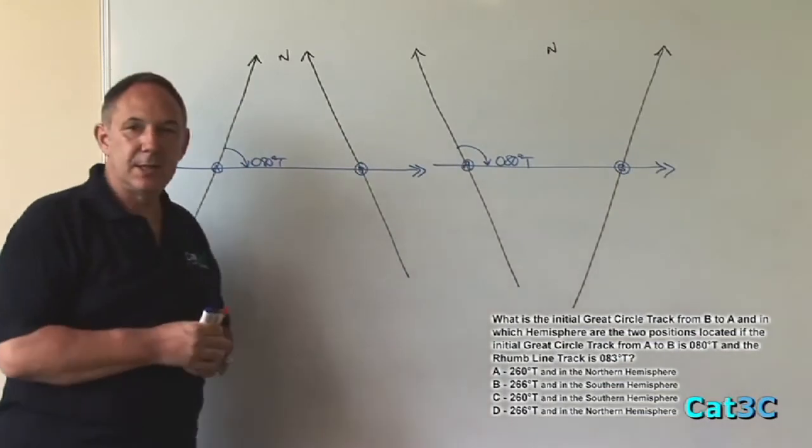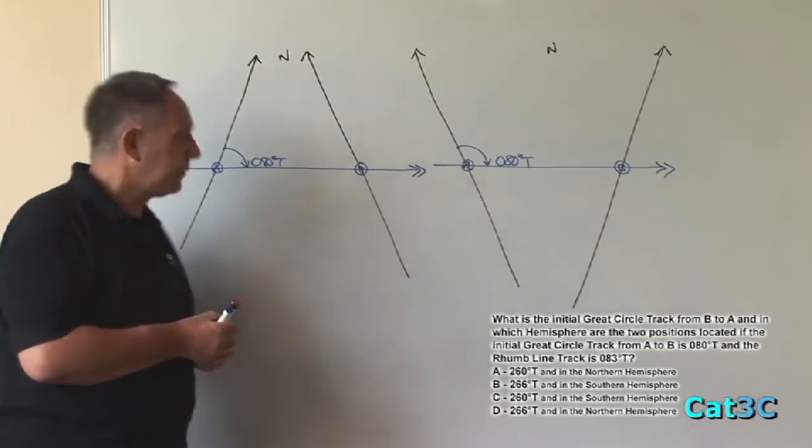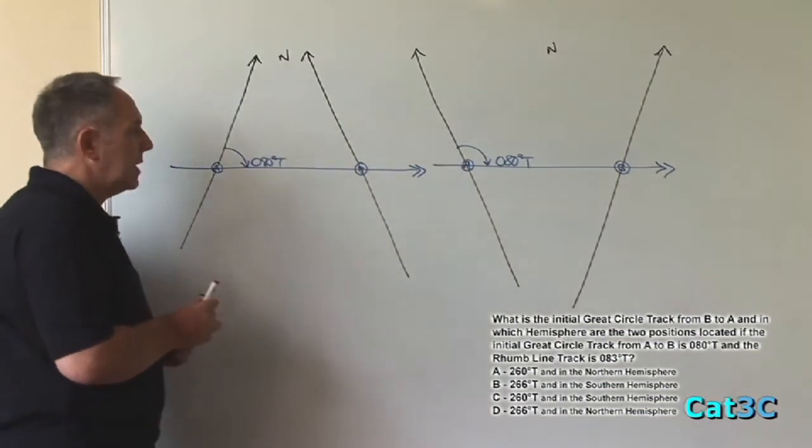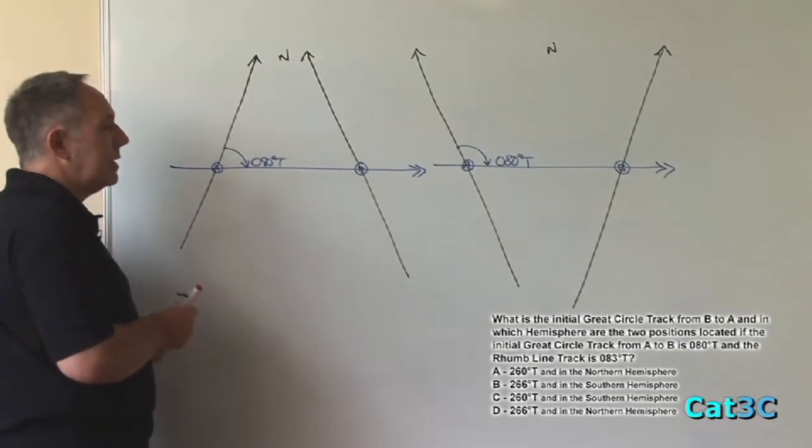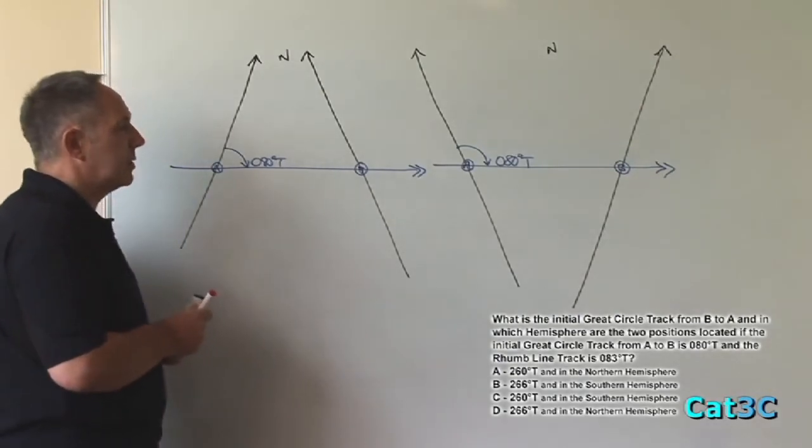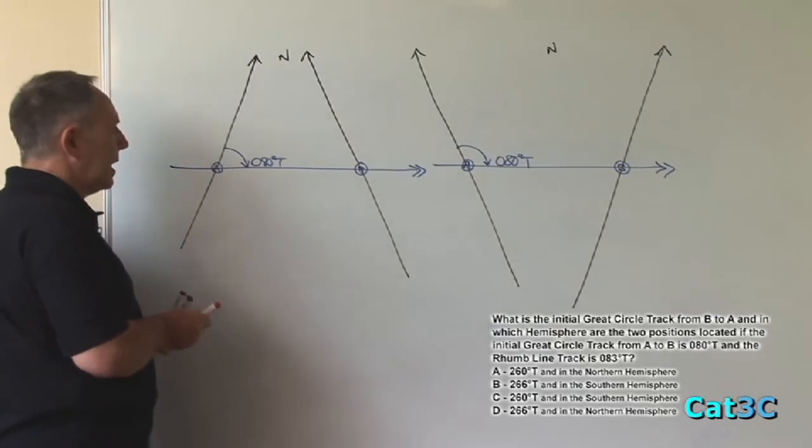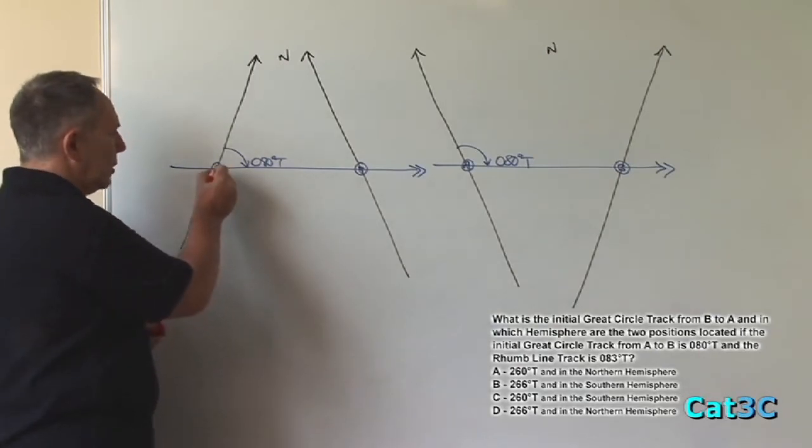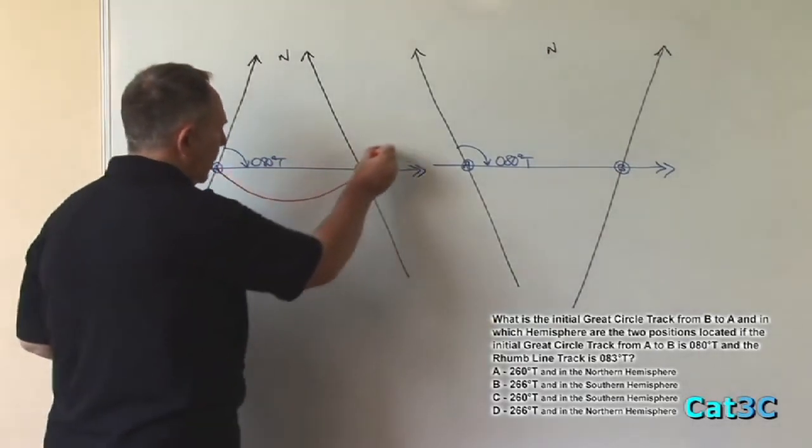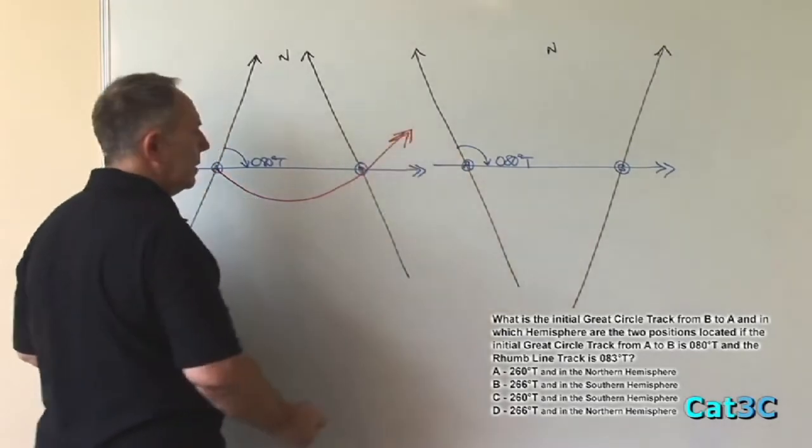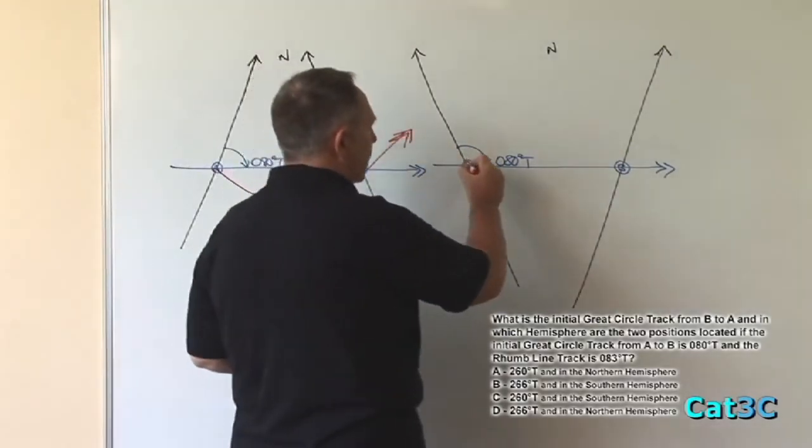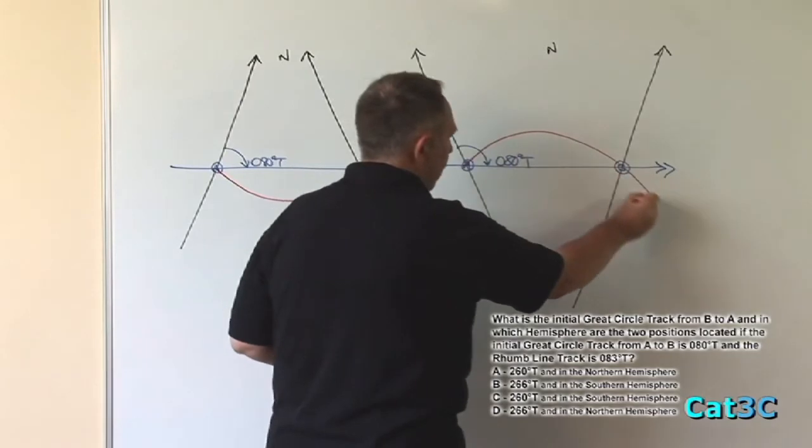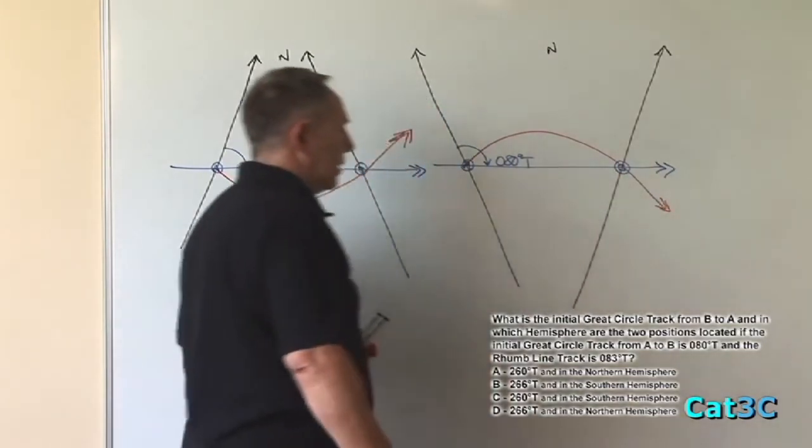Now, to find out which one's correct, I need to add in the rum line tracks. Each great circle has a rum line track and in each case it's on the equatorial side of the great circle. Therefore, in the Northern Hemisphere, it curves down towards the south from the great circle track and in the Southern Hemisphere, it curves up away from the great circle track.